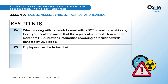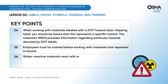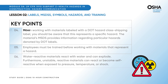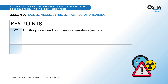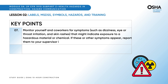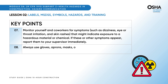Employees must be trained before working with materials that represent a hazard. Water-reactive materials react with water and can explode. Furthermore, unstable, reactive materials can react or become self-reactive when exposed to pressure, temperature, or shock. Monitor yourself and coworkers for symptoms such as dizziness, eye or throat irritation, and skin rashes that might indicate exposure to a hazardous material or chemical. If these or other symptoms appear, report them to your supervisor immediately. Lastly, always use gloves, aprons, masks, or other PPE whenever called for on a label or MSDS.